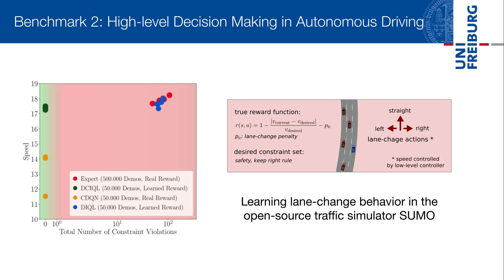We implemented the keeping-right rule as a constraint and measured the constraint violations and speed of the different approaches. As shown in the graph to the left, the deep-inverse-Q agent in blue is imitating the behavior of the expert in red very well, despite being trained on only 50,000 transitions for 100,000 updates. However, both agents are violating the constraint many times, since both are not trained to do differently. The deep-constrained inverse-Q agent in green has almost no decrease in speed, whilst having exactly zero constraint violations. Constrained inverse-Q learning propagates constraint violations back in time so as to optimize for long-term constraint imitation.